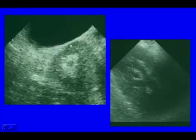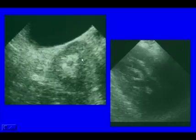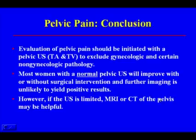In conclusion, evaluation of pelvic pain should be initiated with pelvic ultrasound — both transabdominal and transvaginal — to exclude gynecological and certain non-gynecological pathology. Most women with a normal pelvic ultrasound will improve with or without surgical intervention, and further imaging is unlikely to yield positive results. However, if the ultrasound is limited, MRI or CT of the pelvis may be helpful.